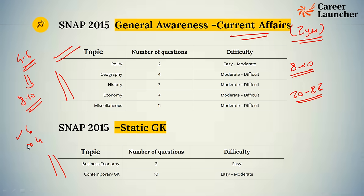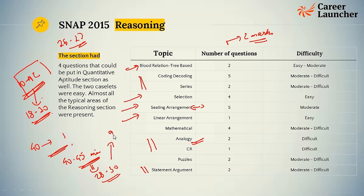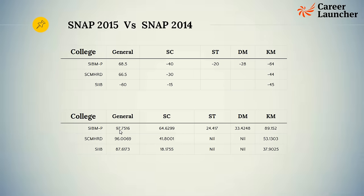One thing I may have missed regarding the reasoning section — in general, 40 to 45 minutes should allow you to attempt roughly 28 to 30 questions if the paper is similar to SNAP 2012 to 2014, and you should be looking at a high accuracy of 90% plus.